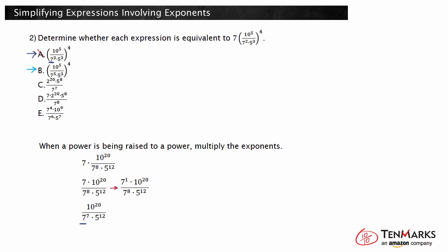Take a look at choice B. It also still has the exponent of 4. Again, the 7 in the front is gone, and this time the exponent for the 7 in the denominator changed to 5. When raised to the 4th power, this would give 7 to the 20th in the denominator, not 7 to the 7th. So choice B is not correct either.